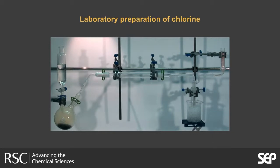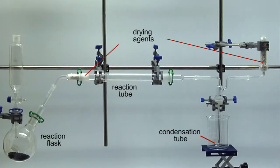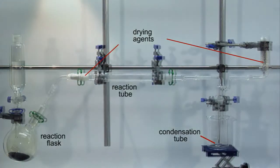Chlorine gas can be made quite conveniently by reacting concentrated hydrochloric acid with potassium permanganate, otherwise known as potassium manganate(VII).